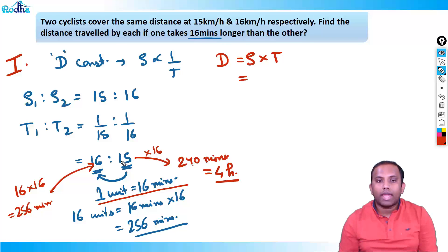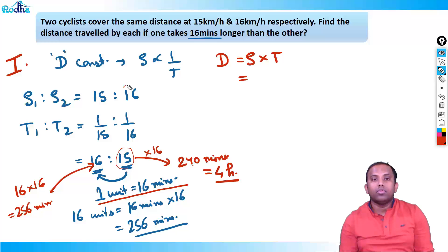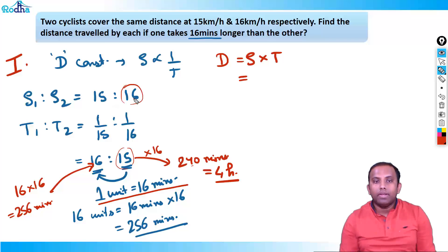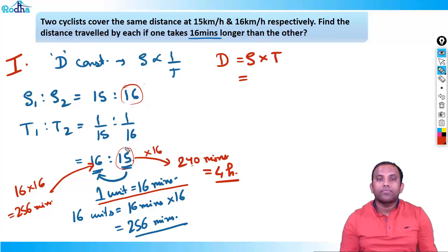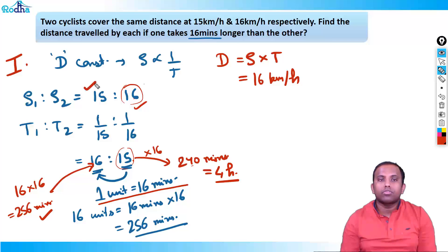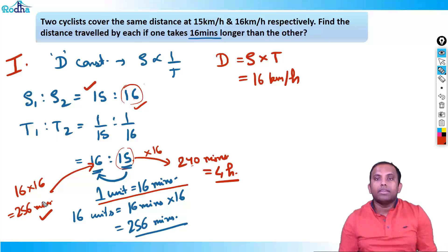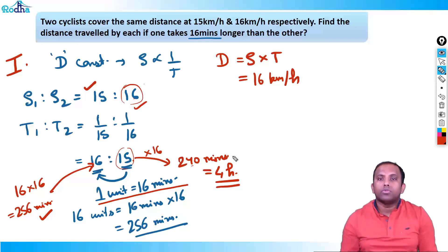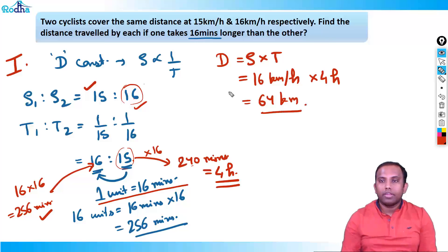Distance = speed × time. Taking speed of 16 km/h with time of 4 hours (240 minutes = 4 hours), distance = 16 × 4 = 64 kilometers. That's the answer from Method 1.